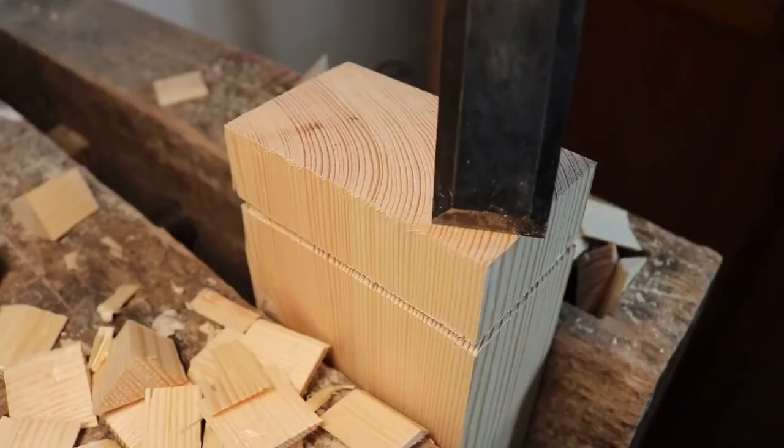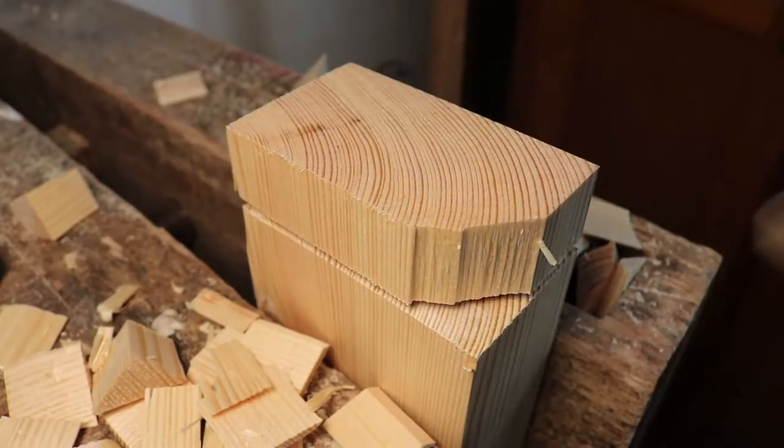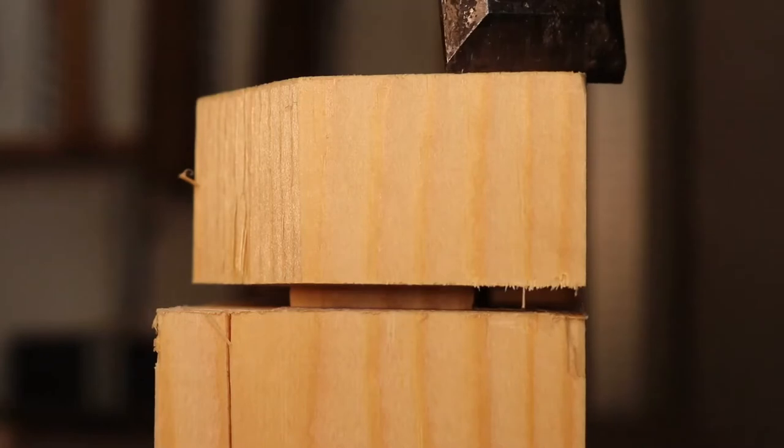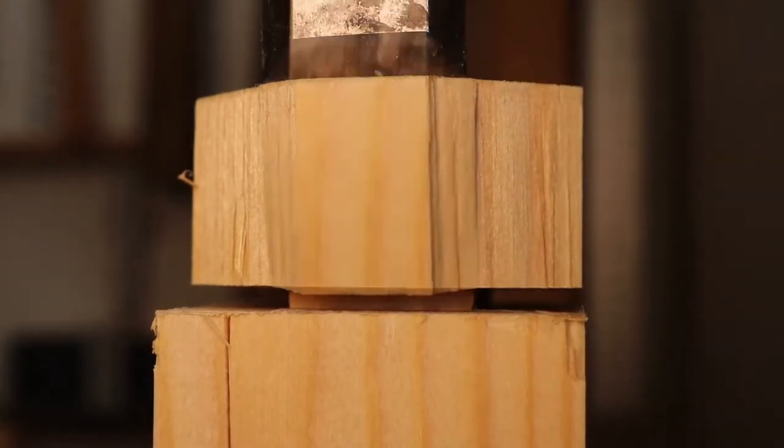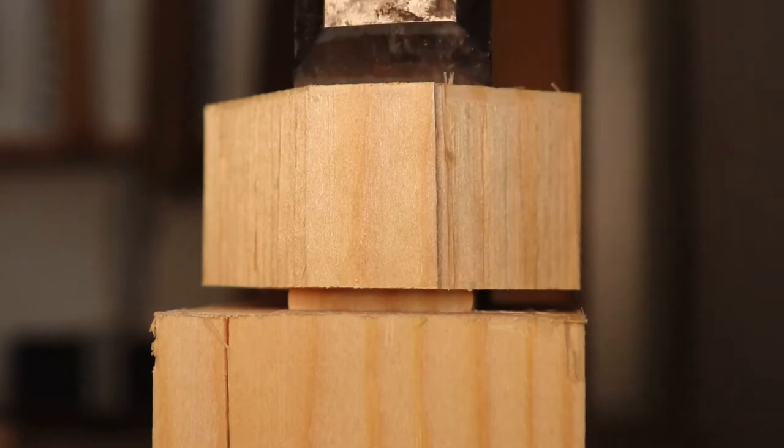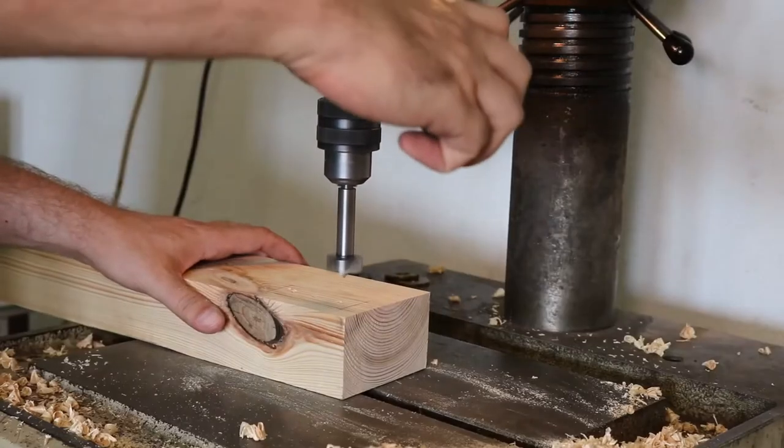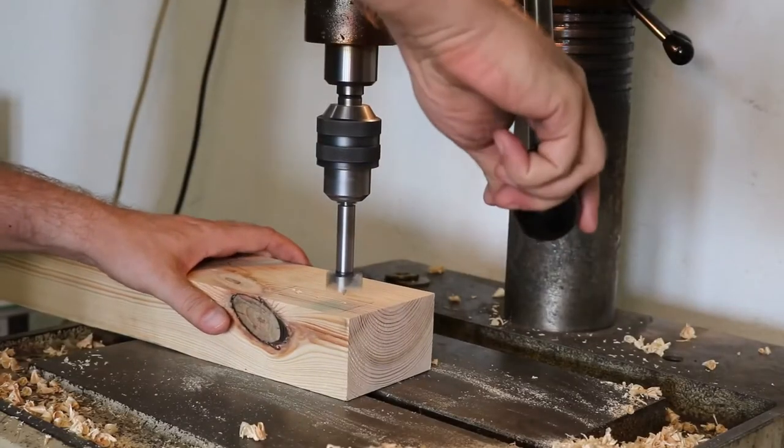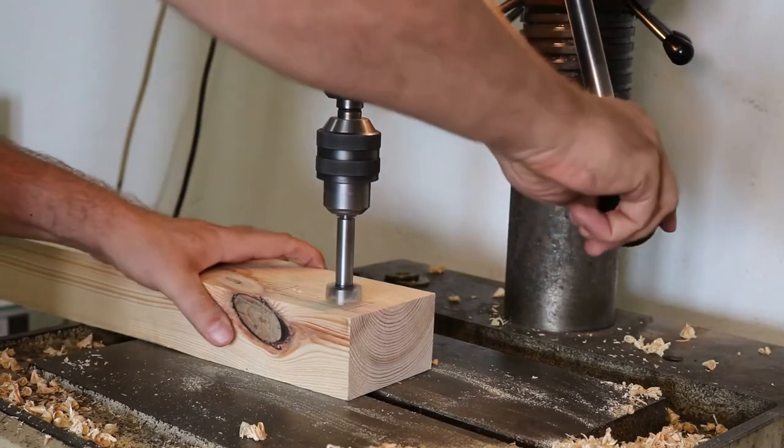Since this was a first for me I tried to learn some techniques from other makers on YouTube up front. I pre-cut the length of the tenons and then pre-drilled the mortises with a Forstner bit. After that it was still a lot of work chiseling away all the excess material, but in the end all went pretty well.